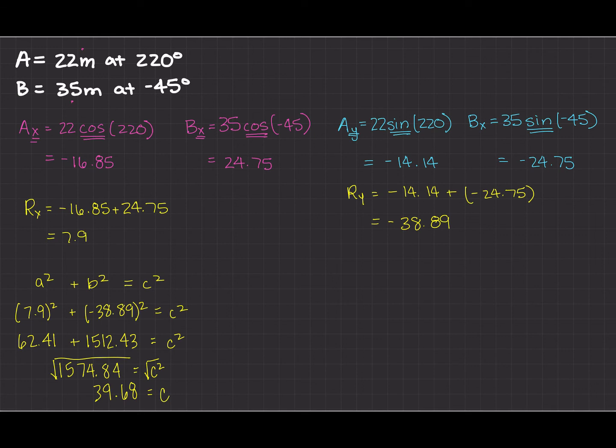And now the very last thing we have to do is we have to get the angle of that resultant. So we're going to use theta is equal to tangent inverse of Ry over Rx. So that's this number over this number. Okay so that's going to give us inverse tangent of negative 38.89 over 7.9. And that's going to give us negative 78.52.